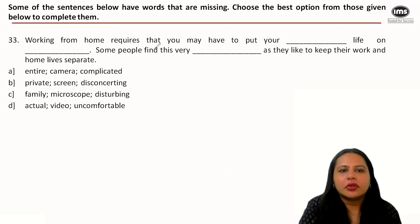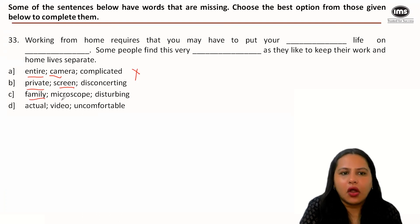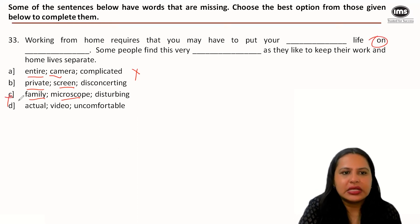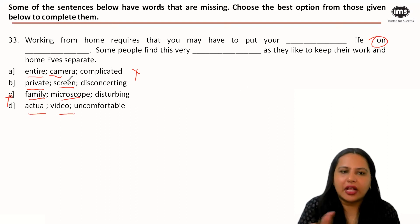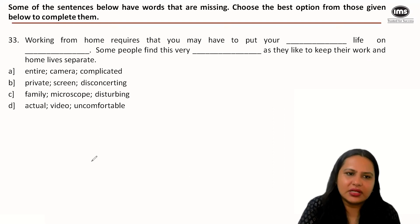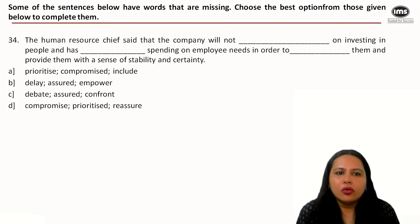For the blanks: 'put your entire life on camera' is too far-fetched; 'private life on screen' is plausible; 'family life under microscope' — it would be 'under the microscope,' not 'on microscope,' so option C is eliminated. 'Actual life on video' doesn't quite work either. Having your private life on screen can be disconcerting. So the correct answer to this question is option B.